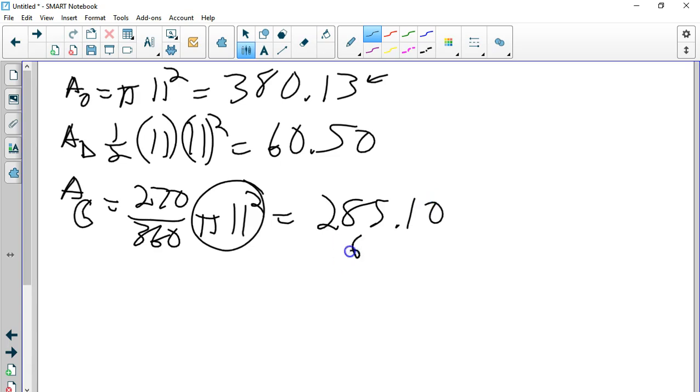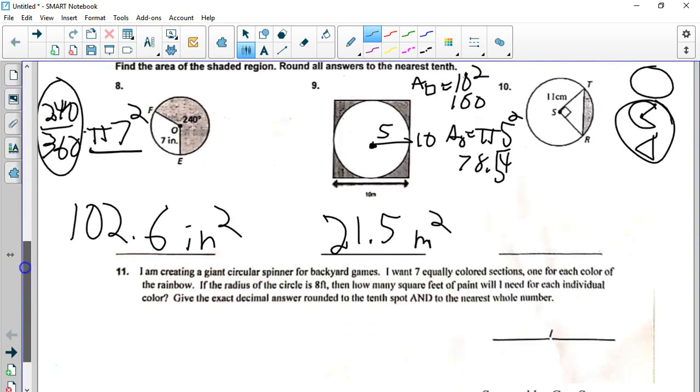Now, if we add the 60.5 to this, we get 345.6. Now, if we subtract that from 380.13, what we get is 34.53, or just 0.5 centimeters squared. That's the area of that little section. So, not a hard problem. It's just step by step. It's a three-part problem.